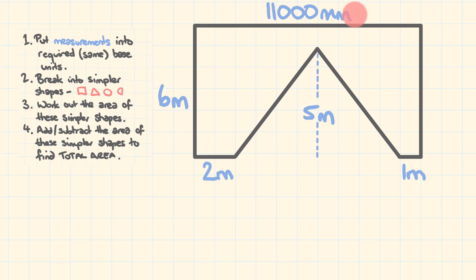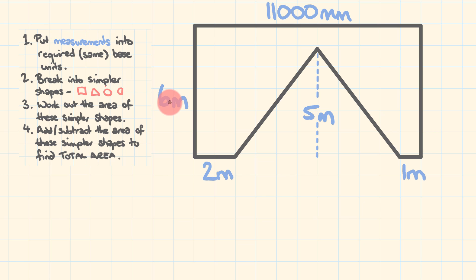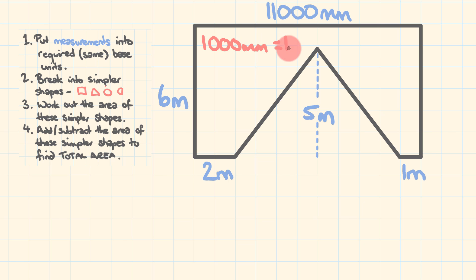For example three, we have a rectangle with a triangle taken out of it, and we're going to work out the area of that shape. First, put the measurements into the same base units. Most measurements are in meters, but this one is in millimeters. There are 1,000 millimeters in one meter, so 11,000 divided by 1,000 equals 11 meters. So do that conversion step first.